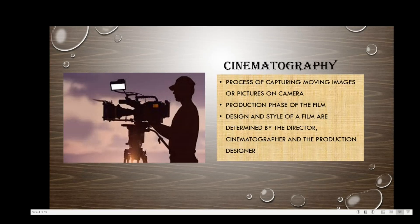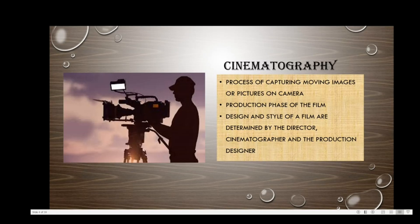Cinematography comes during the production phase of the film, where the design and style are determined by the director, cinematographer, and production designer. It is the creation of images seen on screen — a series of shots that form a unified narrative where each shot and frame demands attention. The cinematographer considers camera placement, camera movement, shot composition, shot size, focus, and lighting.